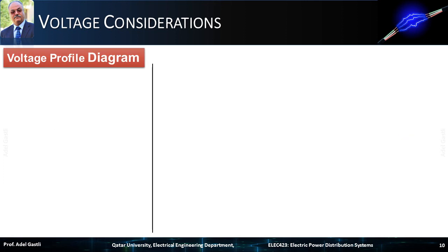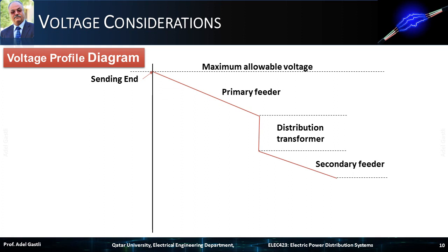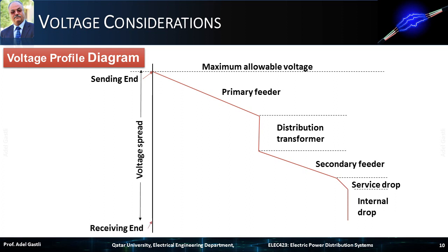To illustrate these different voltage drops in a distribution feeder, we can plot the voltage levels along a feeder. Considering the maximum allowable voltage at the sending end of a primary feeder, there is a certain voltage drop along the distance of this primary feeder, which connects to the primary winding of a distribution transformer. Then a certain voltage drop occurs inside the distribution transformer. A secondary feeder connects the secondary of the transformer to the service connection point and causes another voltage drop. Then there is a voltage drop inside the facility service wiring, and finally another voltage drop occurs at the load connection point such as a socket. The final voltage level should not go below the minimum allowable voltage limit.